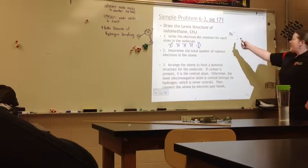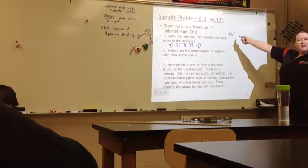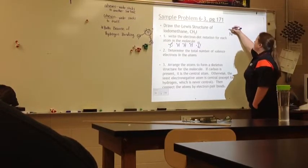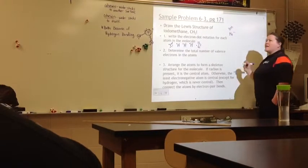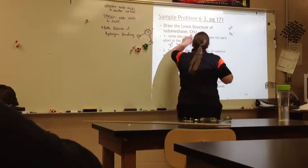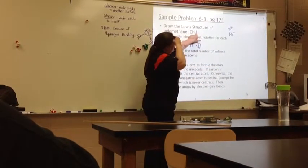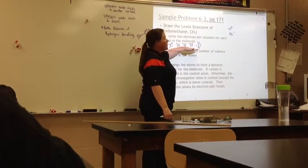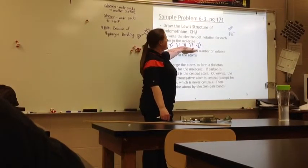Now, I have this special location here that I always write the number of electrons, and I like to call it my electron bank, because for this compound, which has one carbon, three hydrogens, and one iodine, there are fourteen total valence electrons that are going to be contributing to any sort of bonding that takes place.